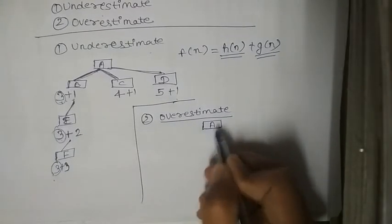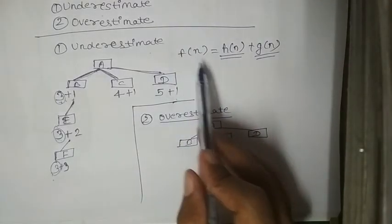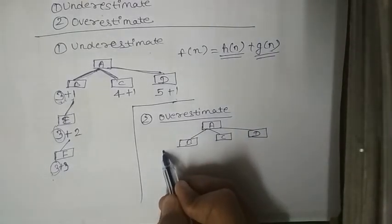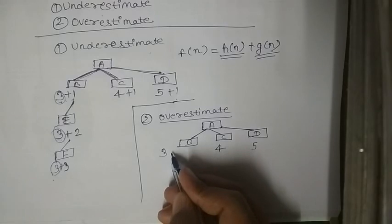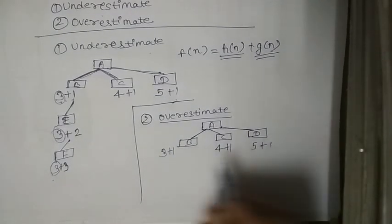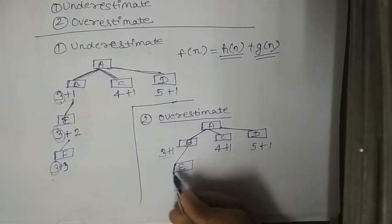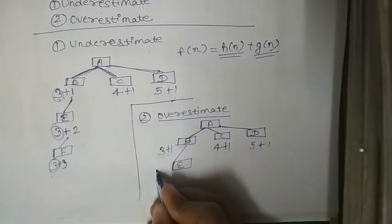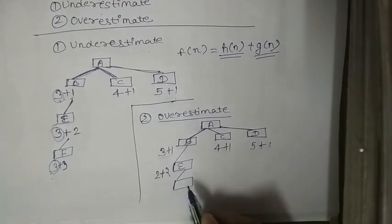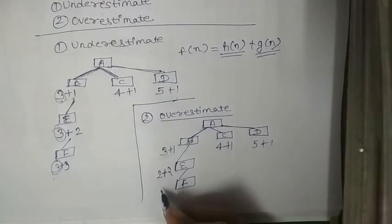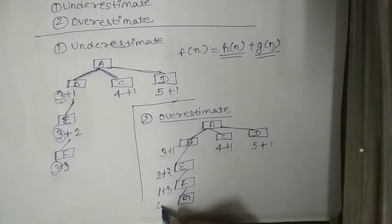Suppose you have a graph like this: A node, B node, then C node, then D node, and you are finding F(n) values for this — in the same way, H(n) plus G(n). Suppose heuristic value for A is 3, B is 4, C is 5, and the edge cost is 1. So the F(n) values become 3+1, 4+1, 5+1. You will explore B node because it has the lesser F(n) value. Solving further, you get heuristic value 2 with edge value 2, then heuristic value 1 with edge value 3, then heuristic value 0 with edge value 4.